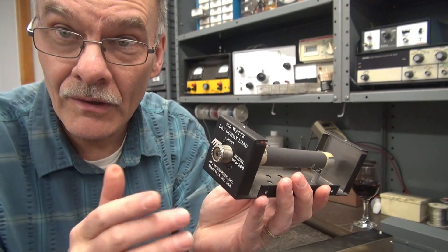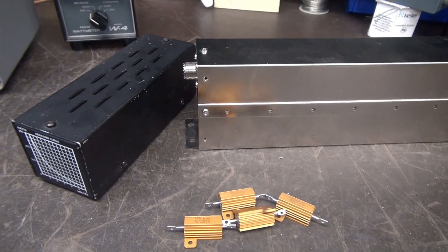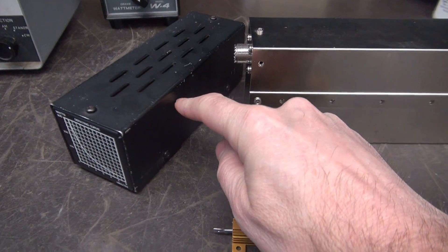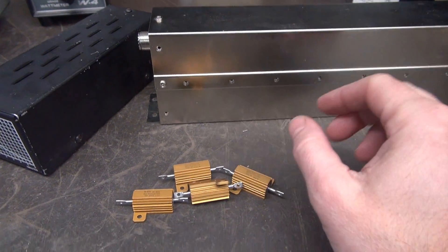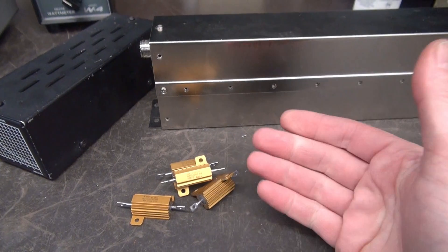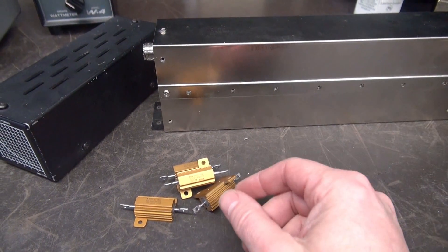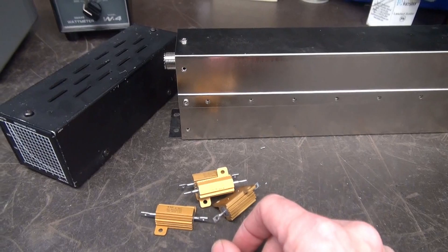Alright, so to repair the MFJ and to create my new dummy load, I'm going to use a bunch of these Dale 20 watt non-inductive resistors. I bought a pile of these off of eBay. I've been waiting for an opportunity to use them. So we're going to take this guy apart, we'll configure that one, we'll repair the MFJ, and then test.